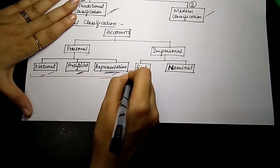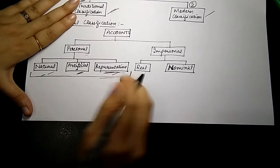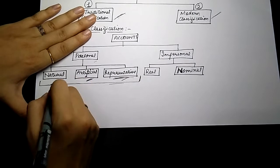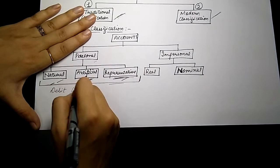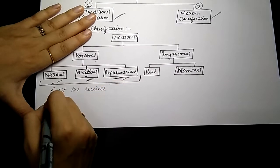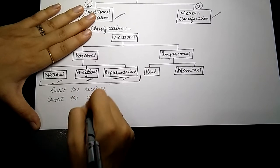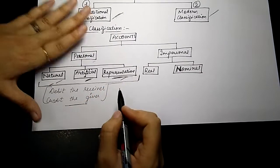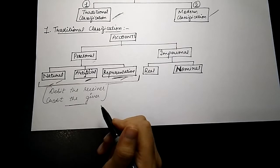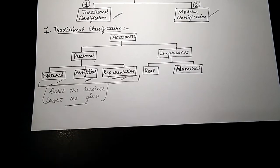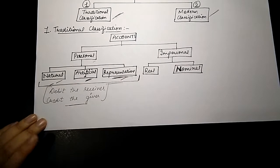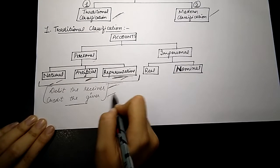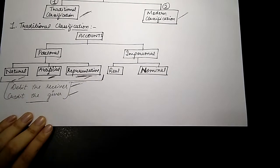For these three personal accounts, you have to remember one basic rule — you have to learn this rule, and it will help you as long as you study commerce. The rule is: debit the receiver and credit the giver. Suppose I gave you cash of 5,000 — you are the receiver and I am the giver. So I will debit you and I will credit myself.